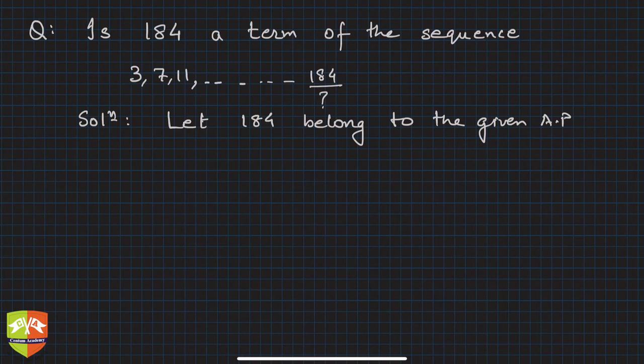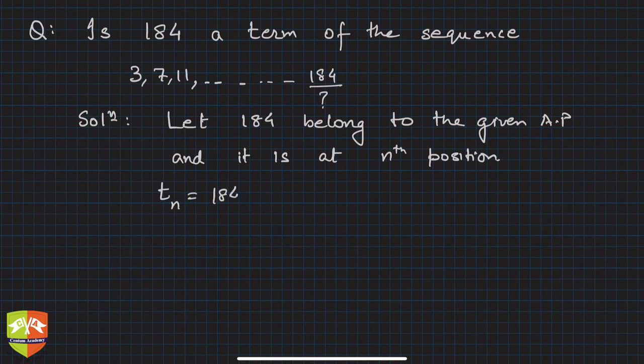Let 184 belong to the given AP and it is at nth position. That means we are saying tn is 184. And what do I know about the sequence and this relationship between the nth term and n?